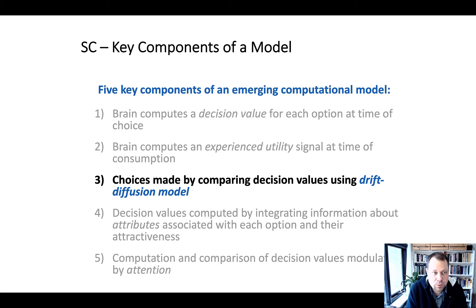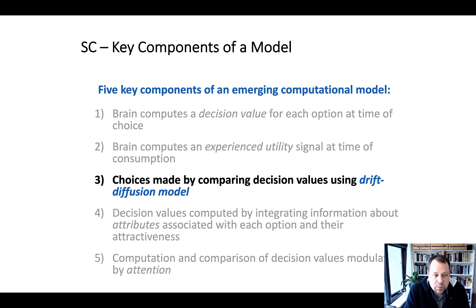Let's now move on to the third component of our model of simple choice, namely the claim that choices are made by comparing decision values using the drift-diffusion model.